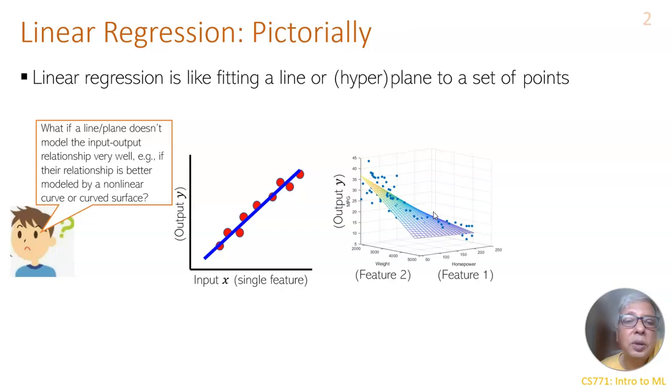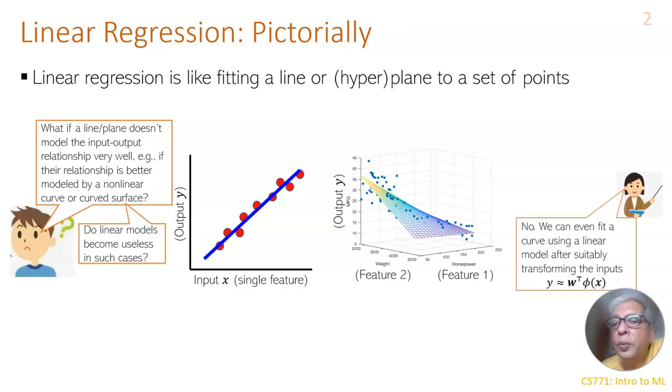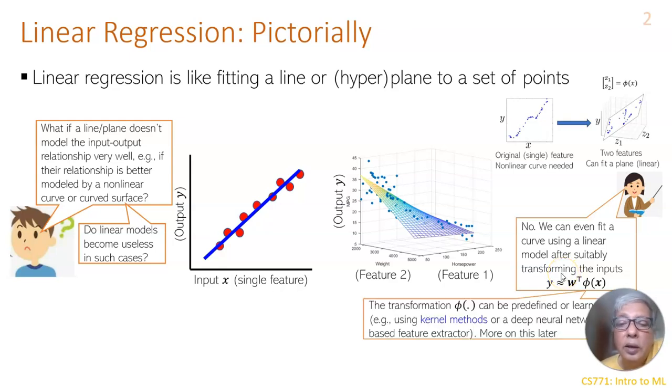Question: suppose the relation is not linear between the input and output, then we take the transformed values of the input variables and then try to fit a linear relation between the input and output.